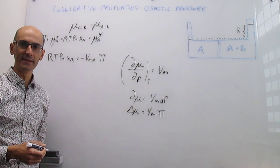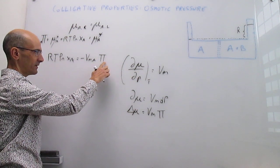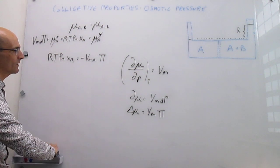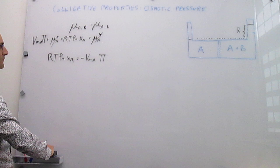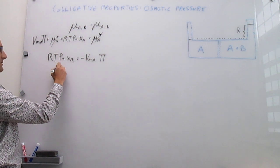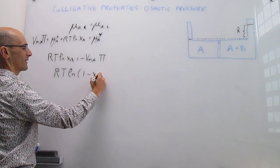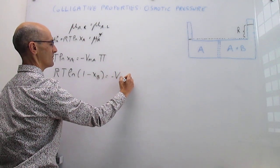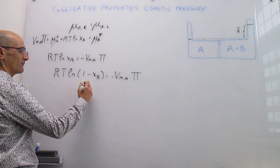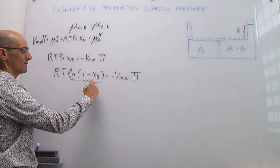Osmotic pressure is a colligative property. The goal is to isolate the osmotic pressure as a function of the concentration of solute in solution. The first step is to express the mole fraction of A in terms of the solute: since this is a binary solution, the natural log of (1 minus the mole fraction of solute B) equals minus the molar volume of the solvent A times the osmotic pressure.